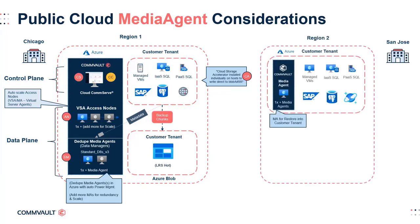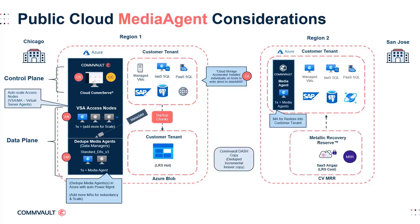San Jose acts as a catch-all for data copied over from Chicago. Using deduplicated auxiliary copies — otherwise known as dash copies — data transfer thins out as data is deduplicated over time, further minimizing bandwidth-related costs. By storing data in longer-term storage like Metallic Recovery Reserve, a fully air-gapped solution can be achieved. Public cloud configurations yield multiple opportunities for businesses to leverage on-demand resources and global accessibility for their data protection needs.